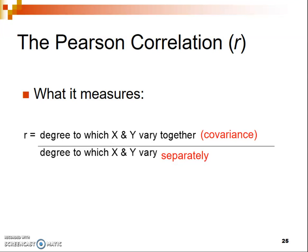The Pearson correlation is a ratio of the covariance over the extent to which X and Y vary on their own — the degree to which people differ on X from each other, and the degree to which people differ on Y from each other. So it's a measure of the covariance compared to the overall variability for those two variables.